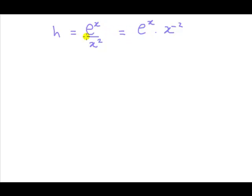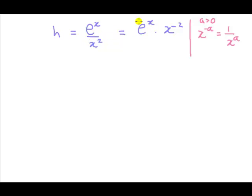Now, why we can write a quotient as a product is because this is a quotient — it's a fraction. x squared in the denominator: one over x squared can be written as x to the power of minus two. Just to recap the rule: if a is bigger than zero, then x to the power of minus a is the same as one over x to the a. So x to the minus two is the same as one over x squared. That's why quotients can always be written as products. Here we have a product — this times this — so this could be my f and this could be my g. And that's why now I can apply the product rule instead.